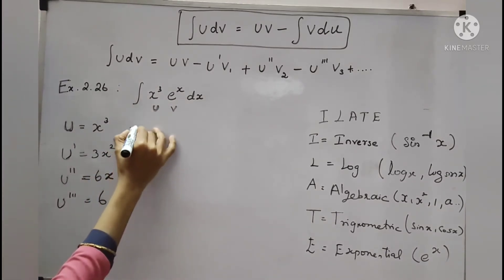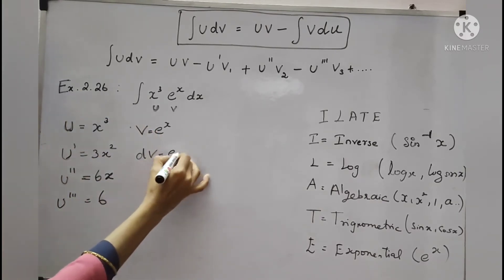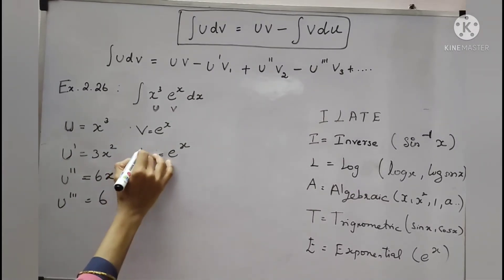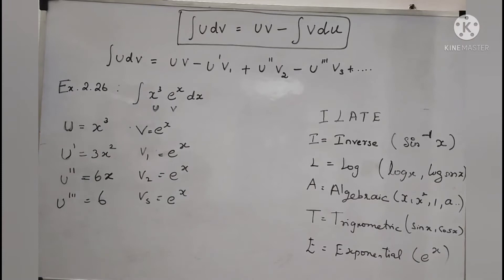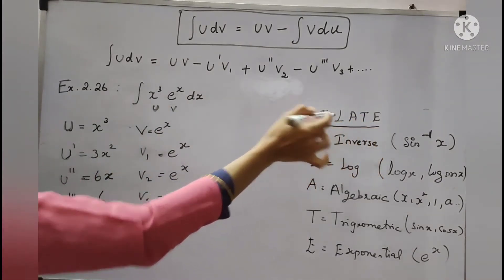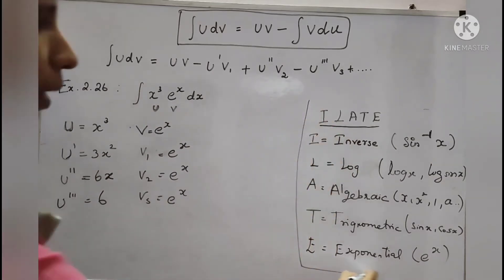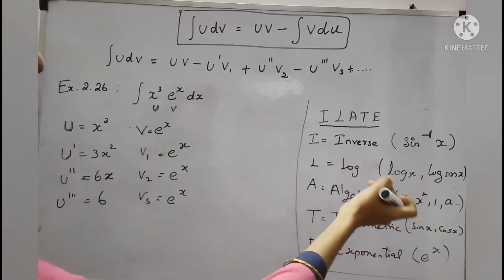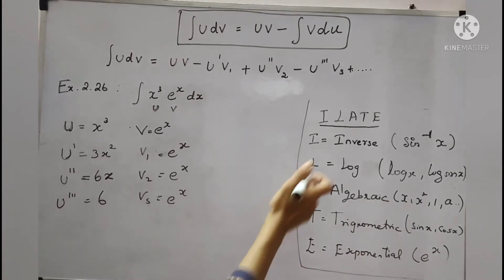Next, v comes to eˣ. So dv means integral of eˣ. So again we can do this integral — this is the v integral, meaning v1, v2. Here is a rule called ILATE. I means inverse trigonometric functions, L means logarithm like log x or log sin x, A is algebraic functions, T is trigonometric functions, and E is exponential — that is n power. So x to the power of 3 is an algebraic function and eˣ is exponential. Algebraic comes first, exponential comes second.